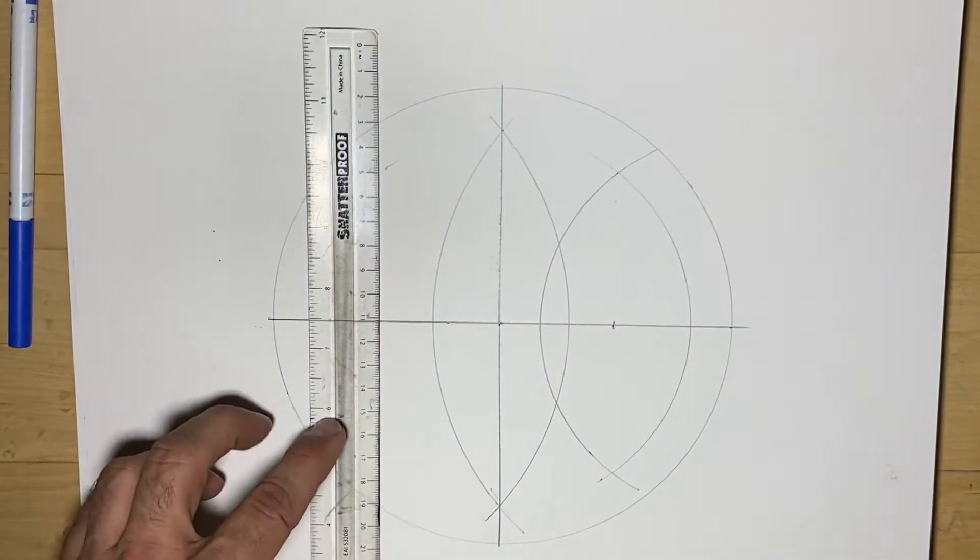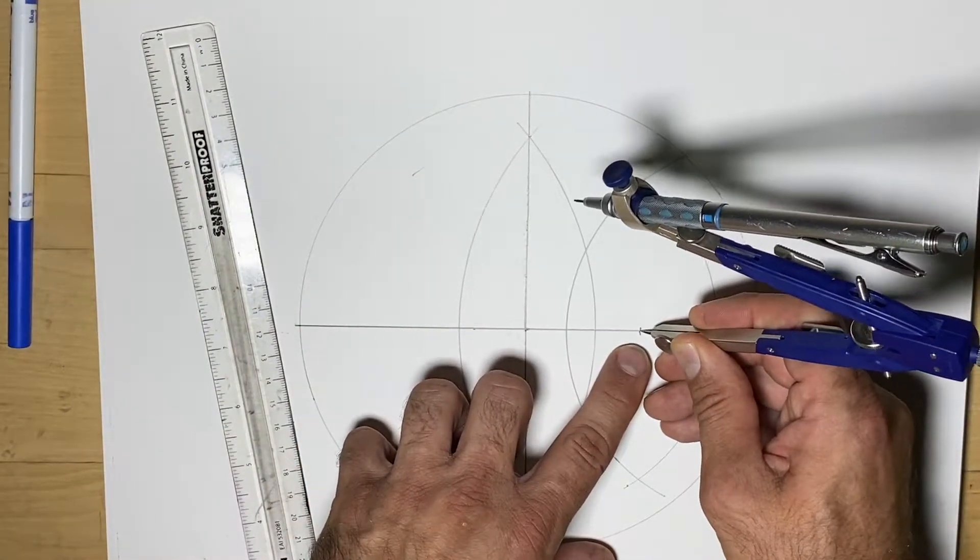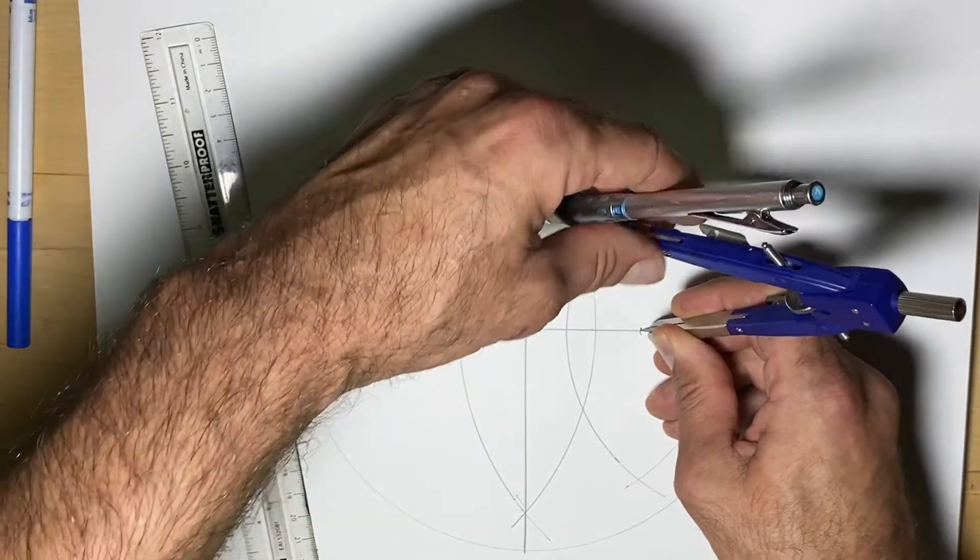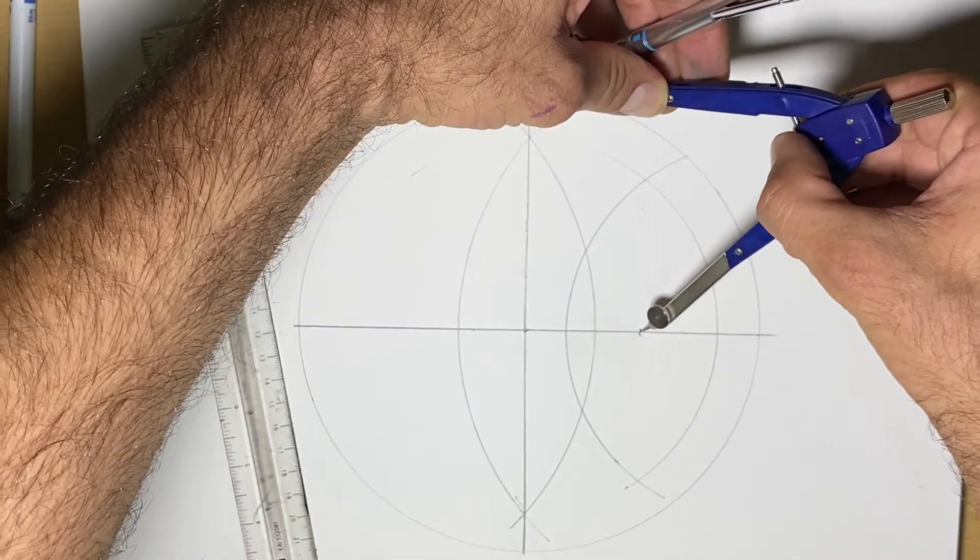The next step is kind of interesting. We're going to put the point where we just found that spot, and we're going to adjust the compass to the top where we found the bisecting line here.